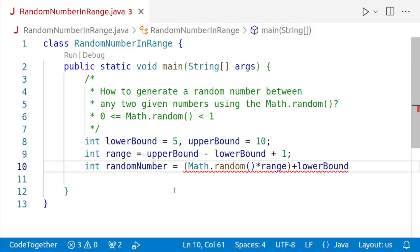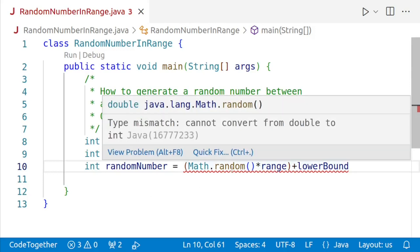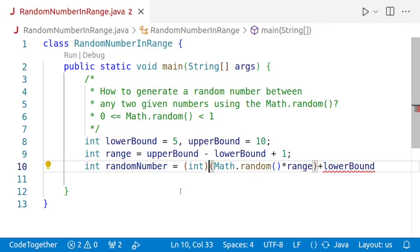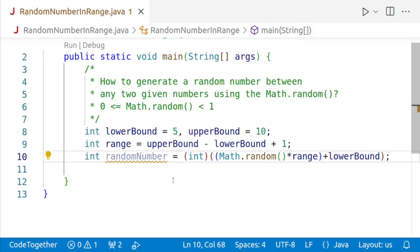Another thing that we must take into account is that Math.random returns a double and what we want is an integer. So, we'll have to typecast this whole thing into an integer. We'll just put everything in the brackets and we'll typecast it.